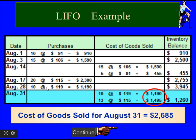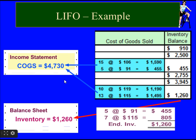For the next sale in LIFO, we again use the most recent purchase. For the next 10 units we use the most recent purchase cost of $119, then the next most recent is August 17 at $115, so 13 multiplied by $115 gives the remaining amount. Total cost of goods sold is $2,685. Similarly we do the journal entry, find the cost of goods sold for the income statement, and record inventory for the balance sheet.